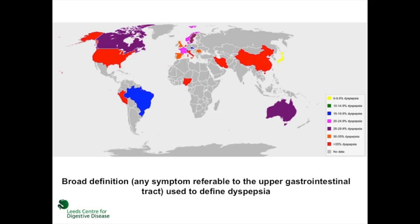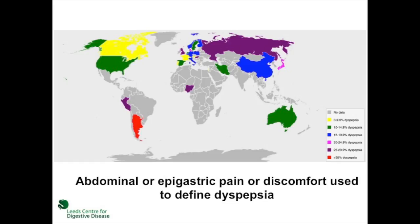When a broad definition, including any symptom referable to the upper GI tract, was used to define the presence of uninvestigated dyspepsia, the prevalence in individual countries varied between less than 10% and more than 35%. When the definition was restricted to epigastric pain or discomfort, the prevalence remained highly variable, but was generally lower than in studies that used a broad definition.